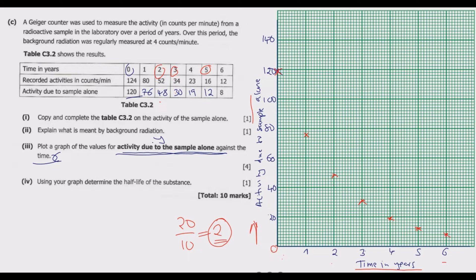Once you have all the points plotted, join them to get a smooth curve. You can use your pencil to draw a smooth line through all the points. Ensure that you clearly label both the x-axis and y-axis. These 4 marks for the graph are a giveaway once you know how to do it.